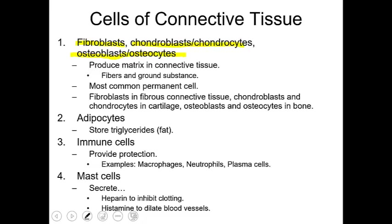In liquid connective tissue — blood — we have immune cells. Blood has red blood cells, white blood cells, and platelets. The immune cells are the white blood cells, and examples include macrophages, which are cells of phagocytosis. Anytime you have foreign particles, pathogens, worn-out cell organelles, or worn-out cells, they're going to be eaten up by macrophages. There are different types of macrophages, which we'll cover when we discuss the different body systems.